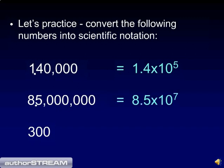Finally, 300 — you move the decimal point 2 spaces, so it becomes 3 times 10 to the second.